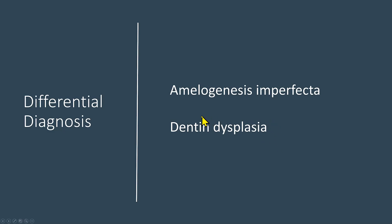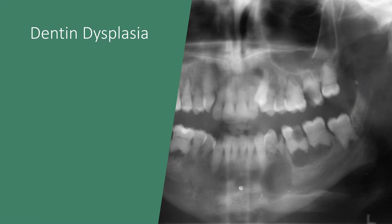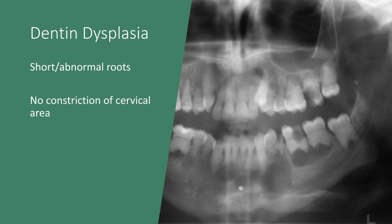The problem comes with identifying dentin dysplasia, so let's review one radiograph of a patient with dentin dysplasia. This panoramic radiograph shows a patient with dentin dysplasia. Here we have short or abnormal roots, whereas in dentinogenesis imperfecta we saw normal root shape. The crown is normal size, just like dentinogenesis imperfecta. However, in dentinogenesis imperfecta we saw constriction of the cervical area, but in dentin dysplasia there is no such constriction.